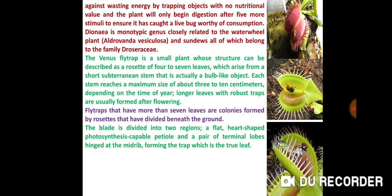Dionaea is a monotypic genus closely related to the water wheel plant Aldrovanda vesiculosa and sundews, all of which belong to the family Droseraceae. The Venus Flytrap is a small plant whose structure can be described as a rosette of four to seven leaves, which arise from a short subterranean stem that is actually a bulb-like object. Each stem reaches a maximum size of about three to ten centimeters depending on the time of year. Longer leaves with robust traps are usually formed after flowering. Flytraps that have more than seven leaves are colonies found by rosettes that are divided beneath the ground.